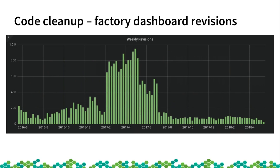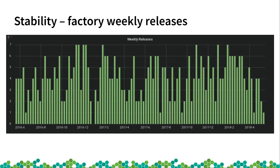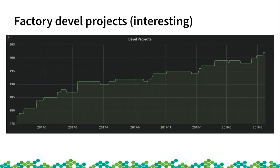Another interesting graph shows some code cleanups — a bunch of empty commits made to internal components that tools share information with. You can see the big spikes in the middle, and once cleaning up those empty useless commits, the rate drops drastically. This graph shows the weekly releases of Tumbleweed. Some weeks we actually hit 7, which is all of them. The gap at the end of the year was the year-end vacation, so we actually had no releases. The developed projects for Factory have been steadily climbing from just over 170 to over 200.